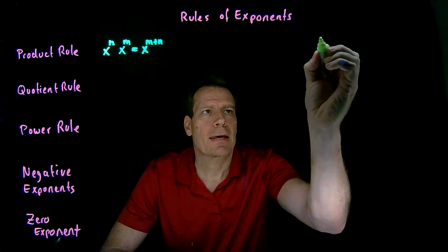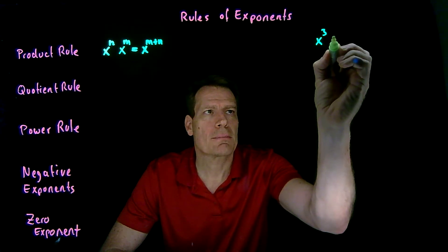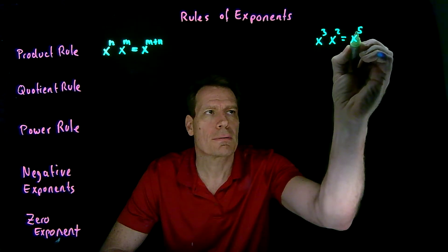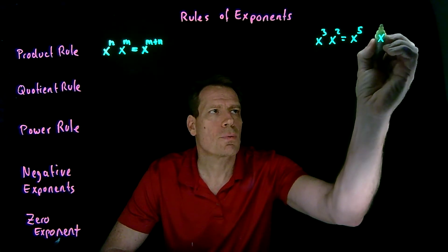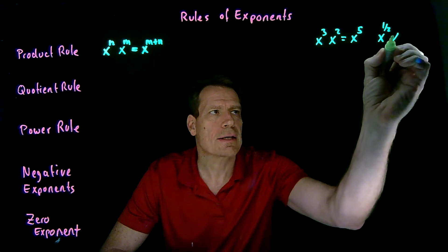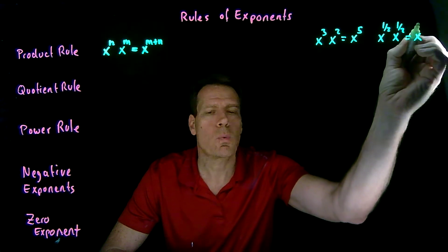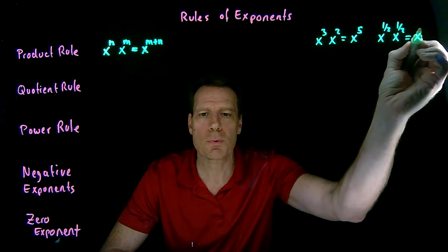So if you have x to the third times x squared, that's going to be x to the fifth. Or if you have x to the one half times x to the one half, well that's going to be x to the one, but if the exponent is one we don't show it.